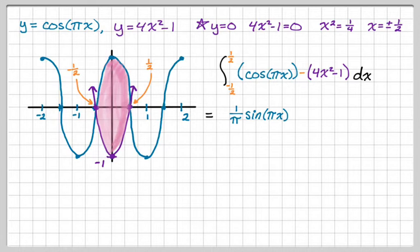And then I'm going to say minus. And then if I find the antiderivative of 4x squared, it's going to be 4 thirds x cubed. And the antiderivative of 1 is going to be x. So I get the quantity 4 thirds x cubed minus x. And then all of this is from negative 1 half to 1 half.